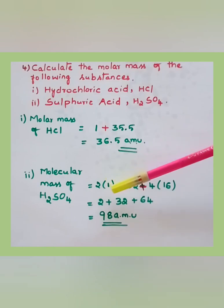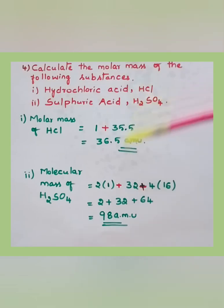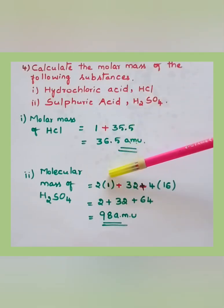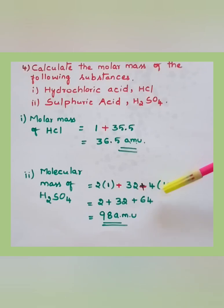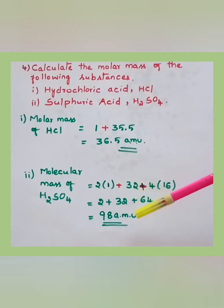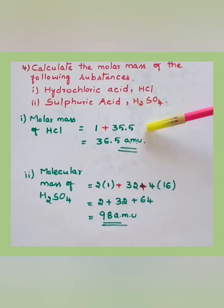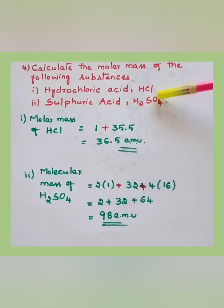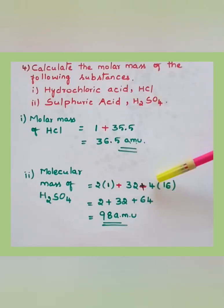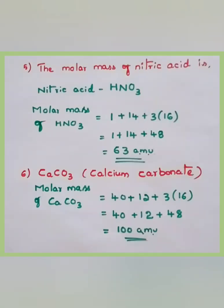Next, molar mass of H₂SO₄: 2×1 (hydrogen) + 32 (sulfur) + 4×16 (oxygen) = 2 + 32 + 64 = 98 amu. For multiple choice, you can do this quickly in your head: 2 + 32 = 34, plus 4×16 = 64, giving 98. Whenever you encounter four oxygens, remember 4×16 = 64.